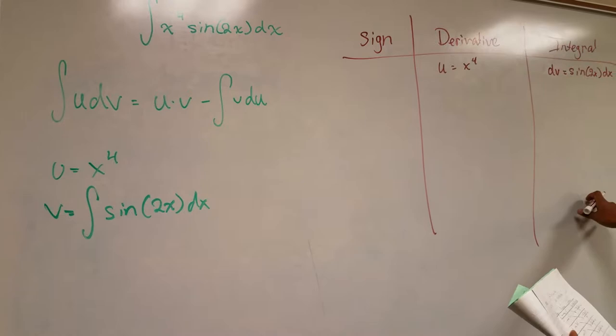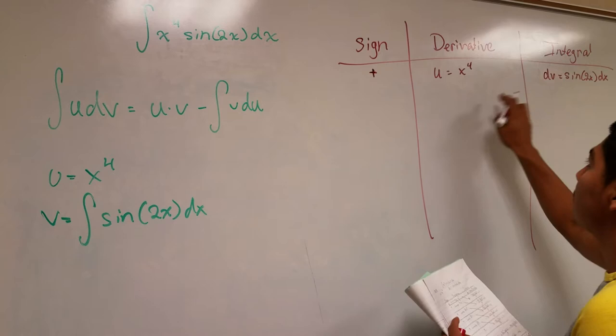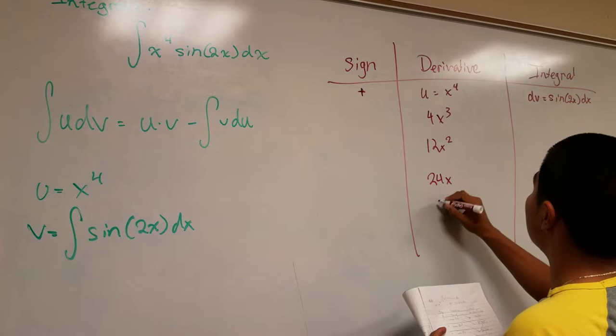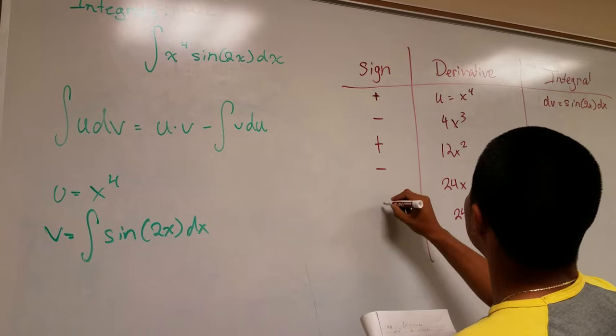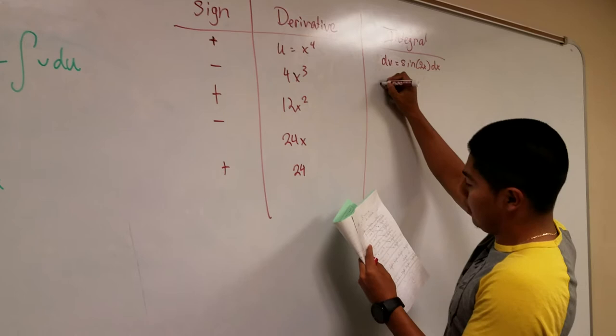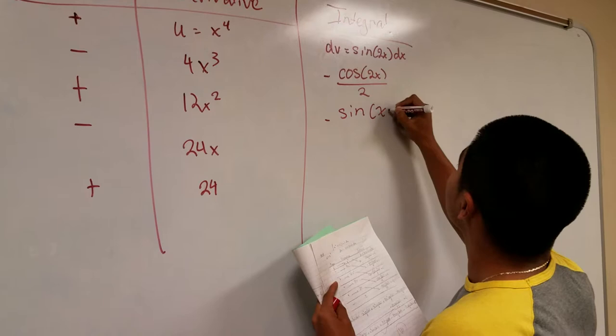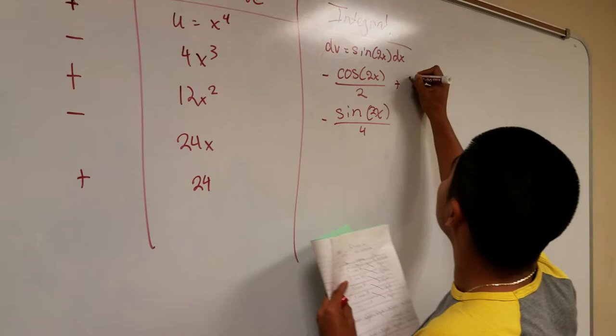Our first sign is positive, and then we differentiate. So the derivatives go: 4x cubed, 12x squared, 24x, and then 24. The signs alternate: plus, minus, plus, minus, plus. When we integrate sine of 2x, we get negative cosine of 2x over 2. Integrating again gives negative sine of 2x over 4 — don't forget the plus c.